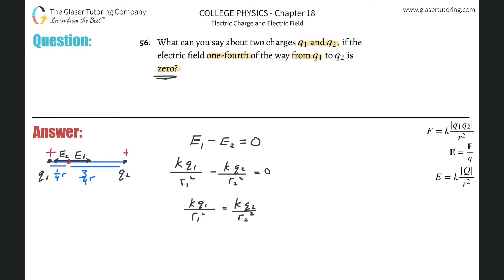q sub one over r one squared is going to be equal to k q sub two over r two squared. Okay, and what do we realize now with the k's at least? The k's go bye-bye. So what I'm left with now is I'm left with q one all over r one squared is going to be equal to q two over now r two squared.